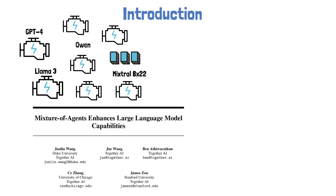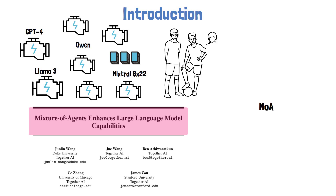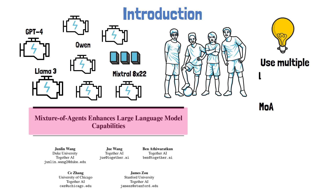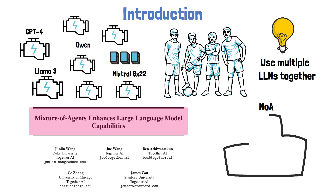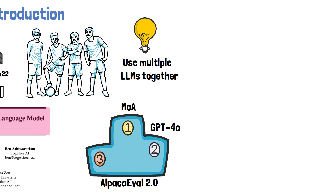In this video we review a recent paper titled 'Mixture of Agents Enhances Large Language Model Capabilities', which presents a new method called Mixture of Agents where LLMs can collaborate together as a team and harness the collective expertise of different LLMs. So instead of using a single LLM to get a response, we can get a response that is powered by multiple LLMs. Using this method the researchers were able to achieve state-of-the-art performance on AlpacaEval-2 and surpass GPT-4-0 by a significant margin.